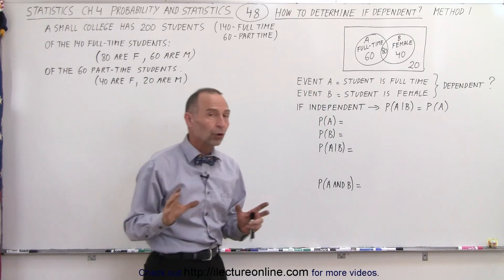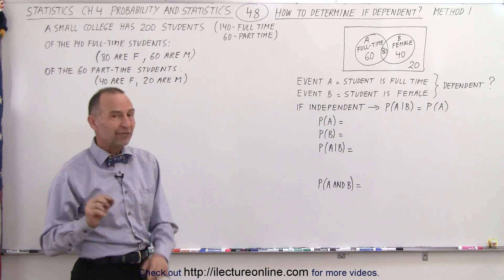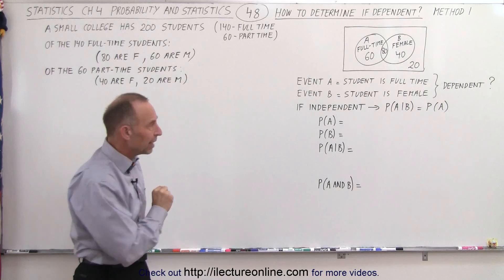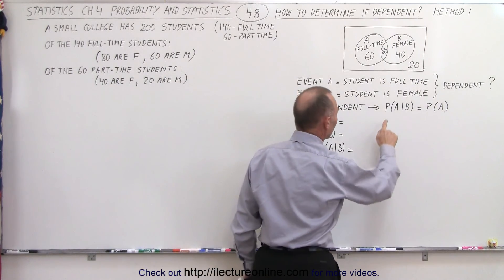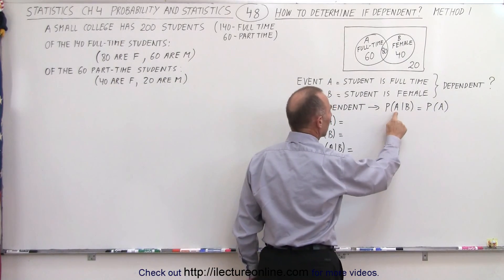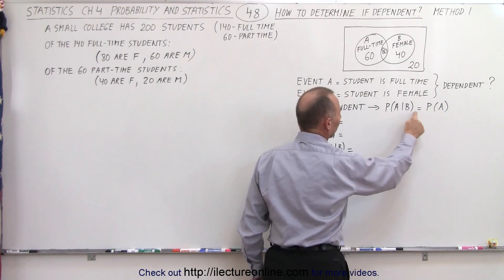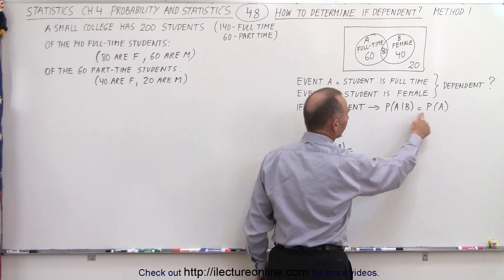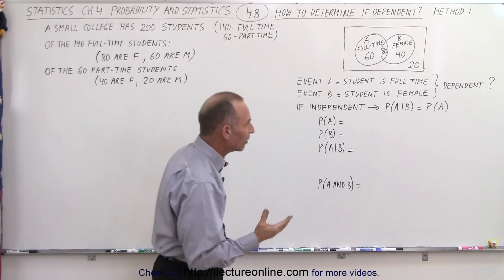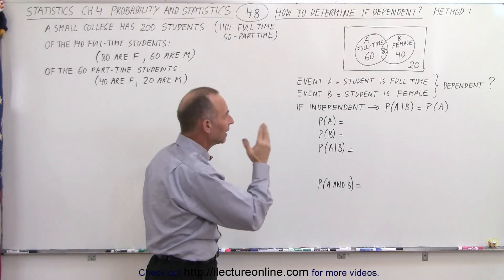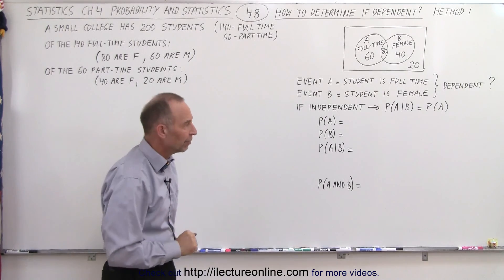The question is: are those dependent events? If they were independent events, we can say that the probability that A will occur, given that B has occurred, is simply equal to the probability of A. So let's use that as a way to figure out if these are dependent or independent events.